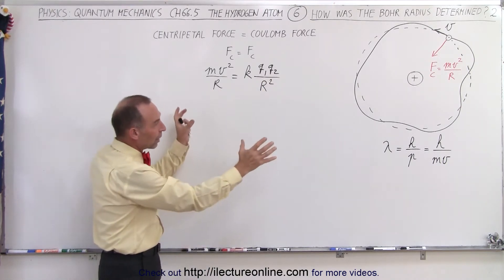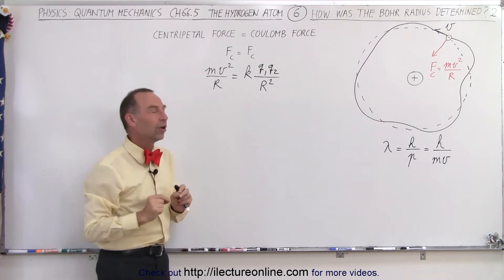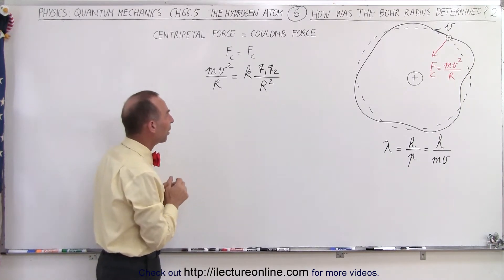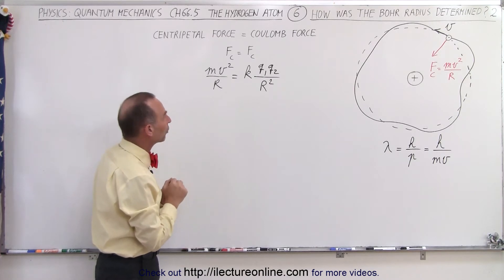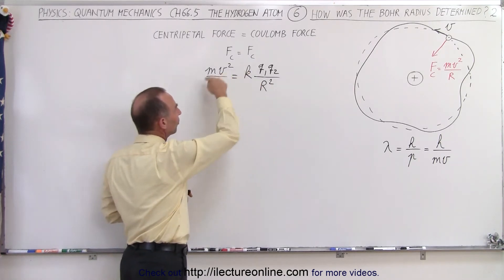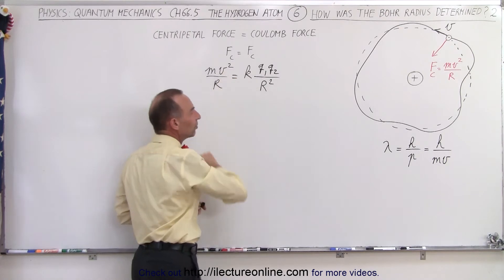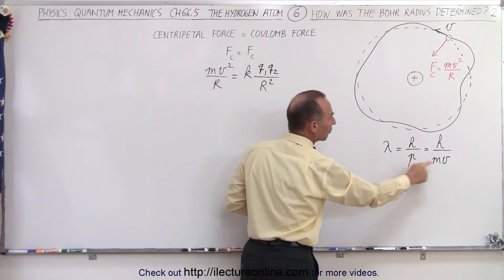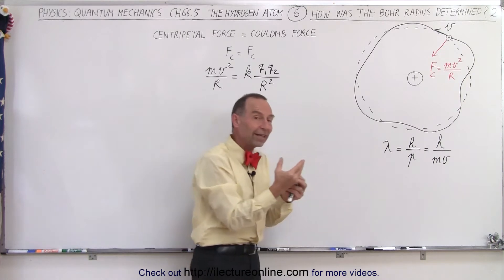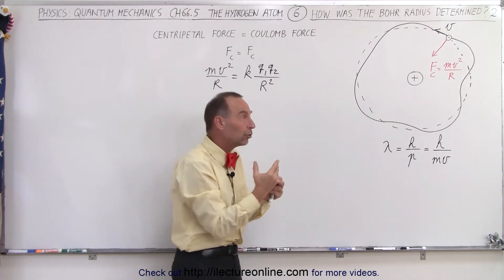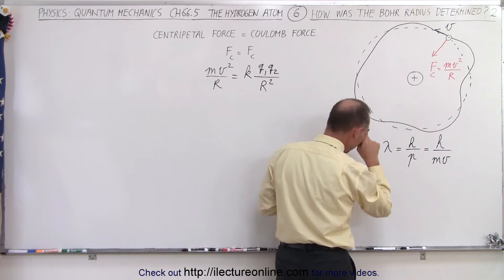We can now use these two equations to determine the radius of the electron's orbit around the nucleus, because this equation has both velocity and the radius. This one will also have the velocity and the radius, because the wavelength has to be related to the radius of the orbit. So let's do that.